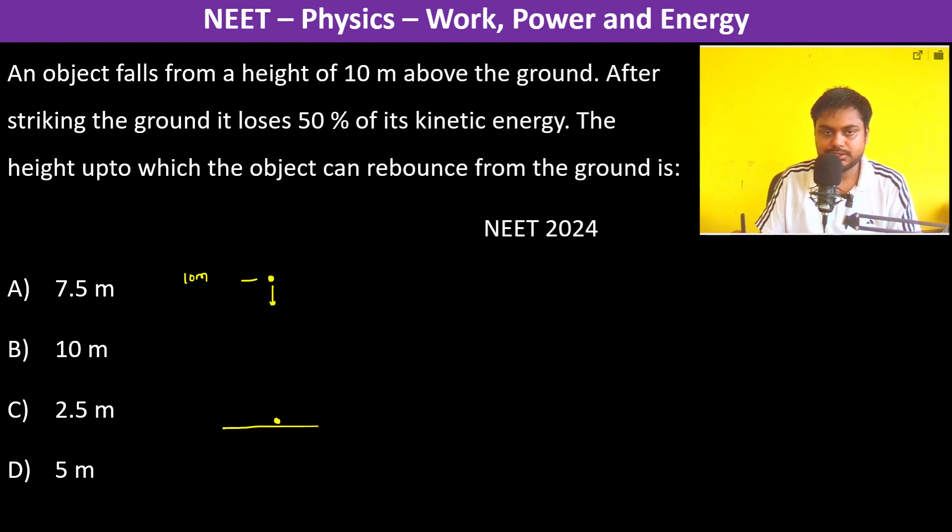The energy of the ball is M × G × 10 meters (MGH). The entire potential energy is converted into kinetic energy, which is M × G × 10 meters. Now it loses 50% of it, so what is remaining?